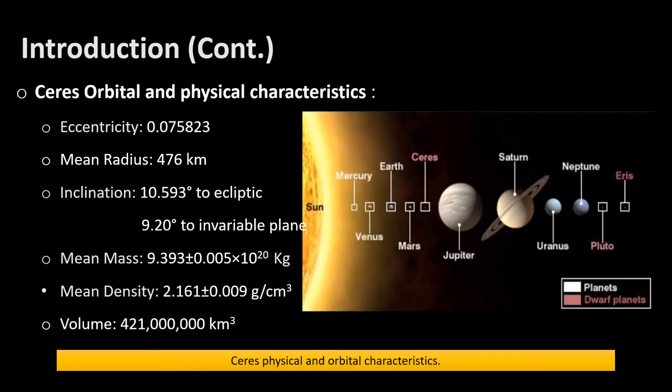In this slide we have some of the Ceres physical and orbital characteristics, such as the eccentricity, mean radius, inclination, mean mass, mean density, and volume.